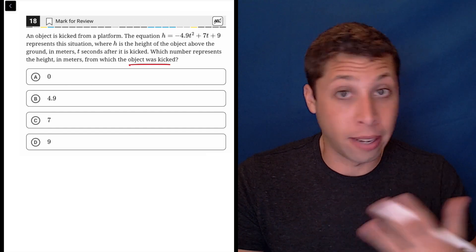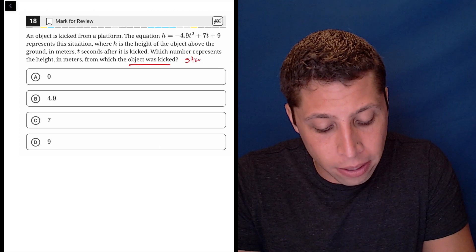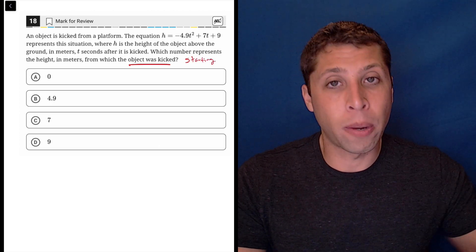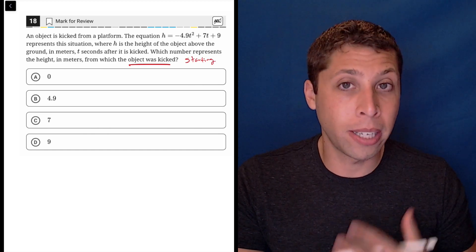We often in math and with stories talk about the idea of a starting point. Especially because when we have a story, there's no negative numbers, the starting point is the y-intercept.